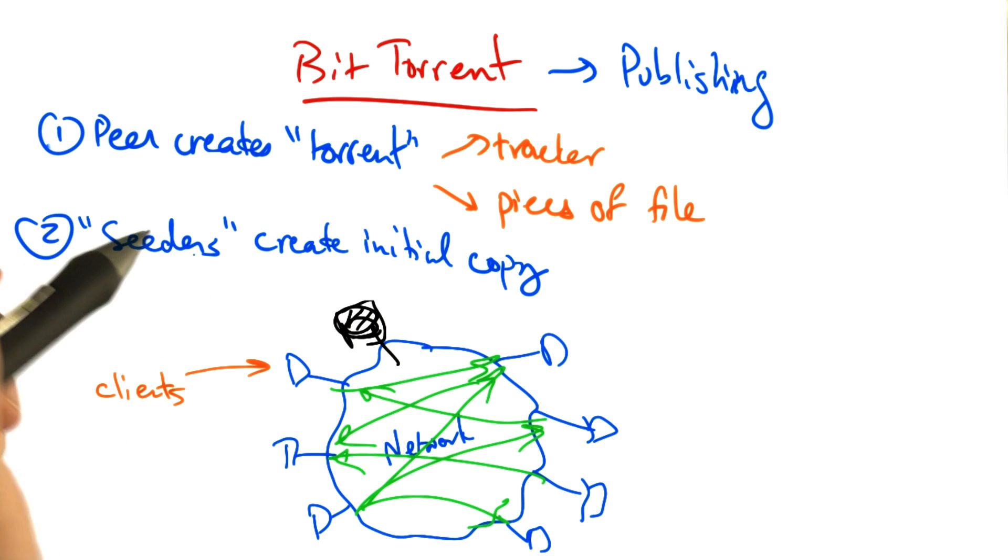Now some peers in the network need to maintain a complete initial copy of the file. Those peers are called seeders.